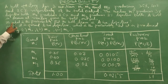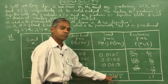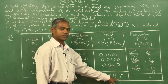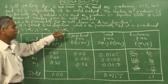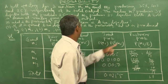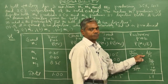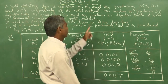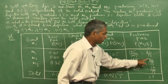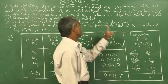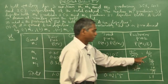The first answer: what is the probability that the bolt drawn is defective? It is equal to 0.0255. For the second question, if the bolt is found to be defective, the probability it was produced by M1 = 21/51, by M2 = 20/51, and by M3 = 10/51. From this chart, we can answer whatever question is asked.